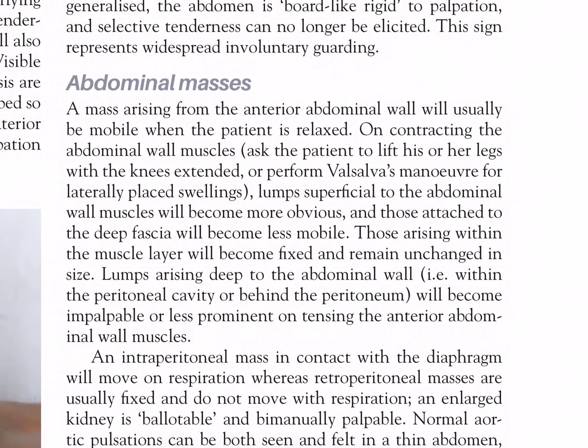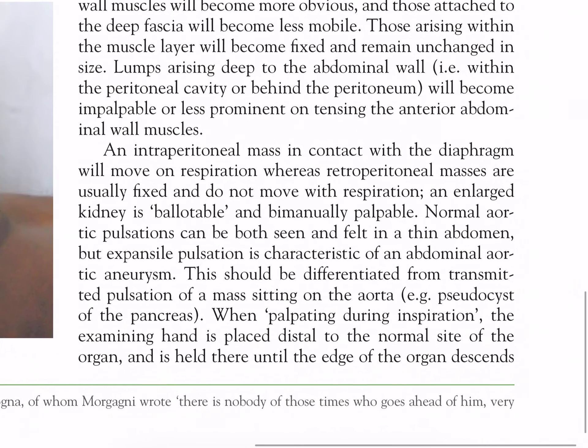Abdominal masses: a mass arising from the anterior abdominal wall will usually be mobile when the patient is relaxed. On contracting the abdominal wall muscles — asking the patient to lift his or her legs with the knees extended or perform Valsalva's manoeuvre for laterally placed swellings — lumps superficial to the abdominal wall muscles will become more obvious, and those attached to the deep fascia will become less mobile. Those arising within the muscle layer will become fixed and remain unchanged in size. Lumps arising deep to the abdominal wall (within the peritoneal cavity or behind the peritoneum) will become impalpable or less prominent on tensing the anterior abdominal wall muscles. An intraperitoneal mass in contact with the diaphragm will move on respiration, whereas retroperitoneal masses are usually fixed and do not move with respiration.